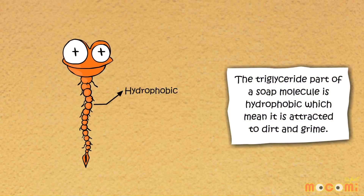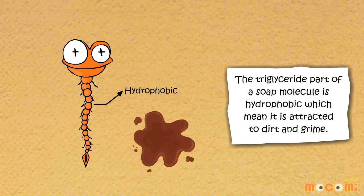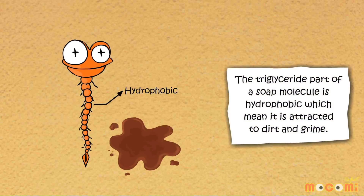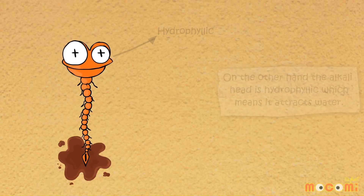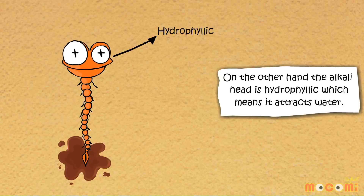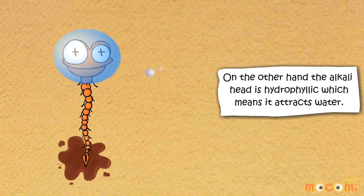The triglyceride part of a soap molecule is hydrophobic, which means it is attracted to dirt and grime. On the other hand, the alkali head is hydrophilic, which means it attracts water.